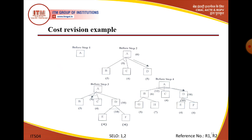यहां पर ध्यान देना — initially कोई भी step नहीं चले हैं, आप initially A node पर हैं। A node को expand किया — step two में देखें — B, C, D nodes मिले। D के साथ जैसे ही move करते हैं, D के children E और F create हो गए। E और F की cost 4 और 4 है, 4 plus 4 = 8, then 1 plus 1 edge cost मिलाके D की overall cost 10 निकल गई।